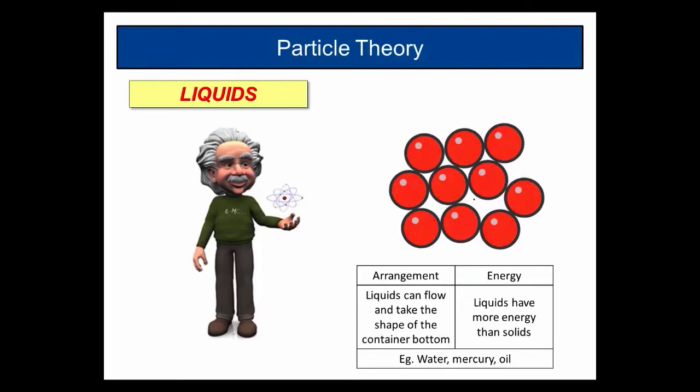Now here's the liquids. Liquids, the particles are close together but they can flow. Key thing is they can flow and take the shape of the container at the bottom. What do you mean by that? Say you've got here a beaker like this, and if you pour a liquid into it, the particles arrange themselves at the bottom of the beaker.